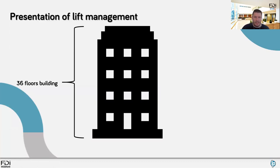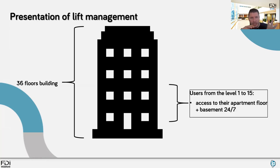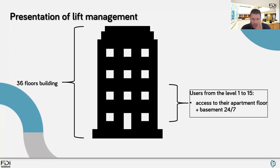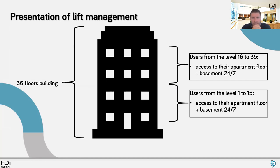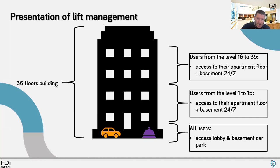Taking the example of a 36-floor building, by using lift management integrated with iPerson, you can allow only certain residents — for instance, from level 1 to level 15 — to access their apartment floor and the basement 24/7. Users with car access have access to the lobby and basement car park, and from there can use the lift to reach their apartments.